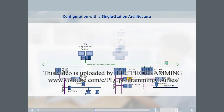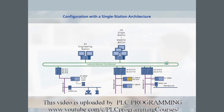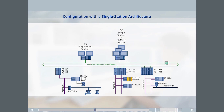The first example illustrates a small system with one engineering station, and a single station on which both OS runtime and batch server and client functionality are installed. The PC should have at least two monitors, so that there is enough screen space to be able to control and monitor the batch control center, batch CC, and the OS at the same time.